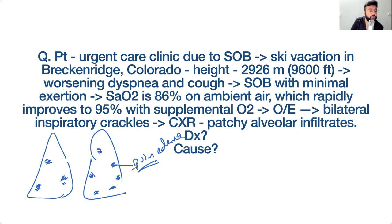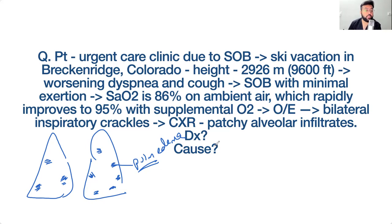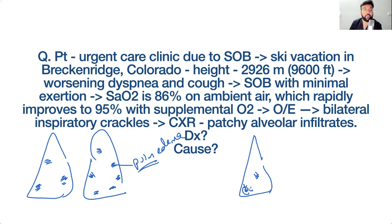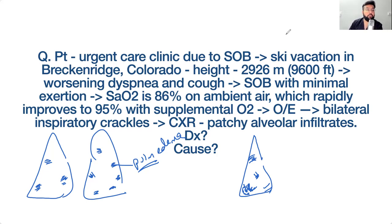At high altitude, because of hypoxia-induced vasoconstriction in some areas and dilation in others, there is V/Q mismatch. In areas with vasoconstriction, blood is redirected to other areas, causing very high hydrostatic pressure in those capillaries. The hydrostatic pressure becomes so high that it ruptures the alveolar-capillary membrane, causing localized edema. Wherever hydrostatic pressure is high, you get edema, producing patchy alveolar infiltrates.